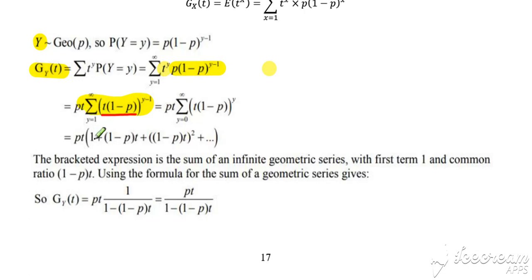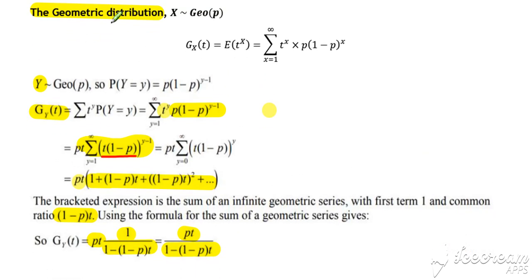If we expand that summation, substituting y equals 1, then y equals 2, etc., we get this expansion with p times t factorized out of the front. This expansion is a geometric progression with common ratio 1 minus p times t. Using our sum to infinity formula, we get a over 1 minus r multiplied by p times t. So we get p times t over 1 minus 1 minus p times t.